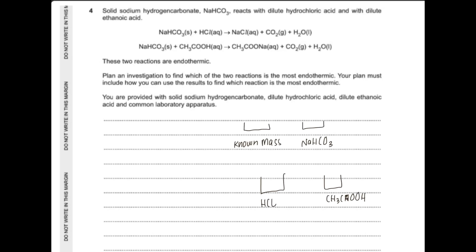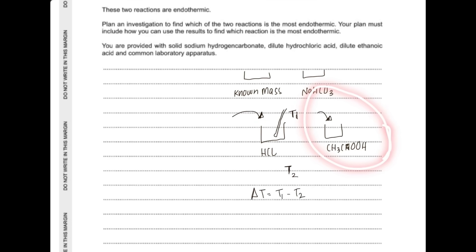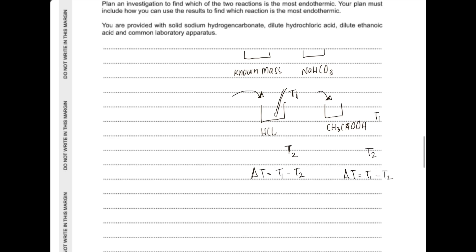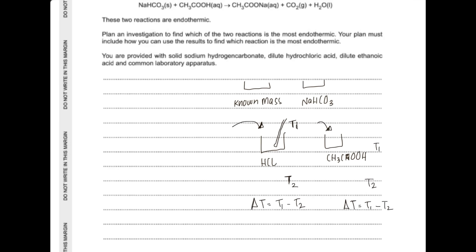Place a thermometer in each acid to measure the initial temperature t1. Add the sodium hydrogen carbonate to the first beaker while stirring and record the lowest temperature reached as t2. The change in temperature is t1 − t2. Repeat this procedure with ethanoic acid, again recording t1 and the final lowest temperature t2 to find its temperature change. Compare the two ΔT values. The reaction with a greater reduction in temperature is more endothermic.